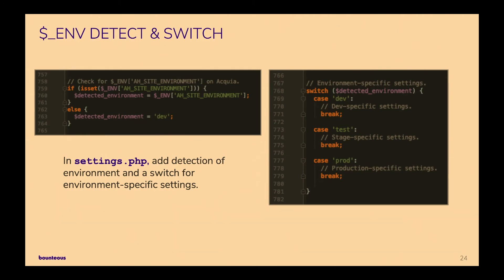The second step is enabling the environment detection switch. I have two code snippets here. The first one grabs the environment variable from Acquia, and if we don't find that environment variable, I'm just setting it to dev — so my local and dev are going to be closely aligned when it comes to configuration. On the right I've stubbed out a case statement to help determine where to drop my config overrides.